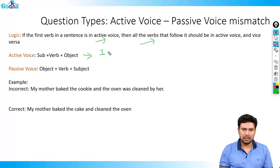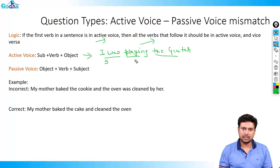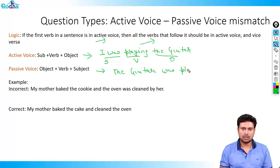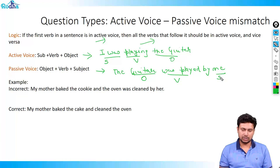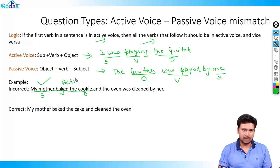For example: 'I was playing the guitar' — 'I' is the subject, 'was playing' is the verb, and 'the guitar' is the object — this is an active voice statement. If I turn the same sentence into passive voice: 'The guitar was played by me' — 'guitar' is the object, 'was played' is the verb, and 'me' is the subject. Now consider the wrong sentence: 'My mother baked the cookie, and the oven was cleaned by her.' The first part is active voice; the second part is passive voice — that mismatch makes the sentence incorrect.